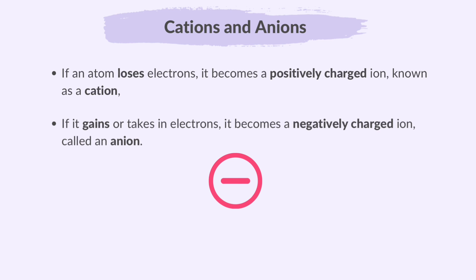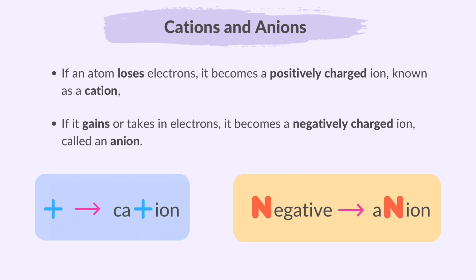If it gains or takes in electrons, it becomes a negatively charged ion, called an anion. If you watched our video, part 3 of chapter 2, atoms, elements and compounds, you might remember this visual representation to remember that cations are positively charged and anions are negatively charged.